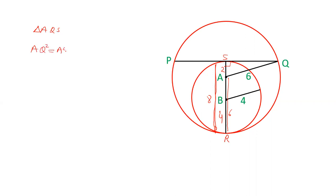AQ squared equals AS squared plus QS squared. AQ is given as 6 squared. AS is 2 squared, and QS squared is calculated.